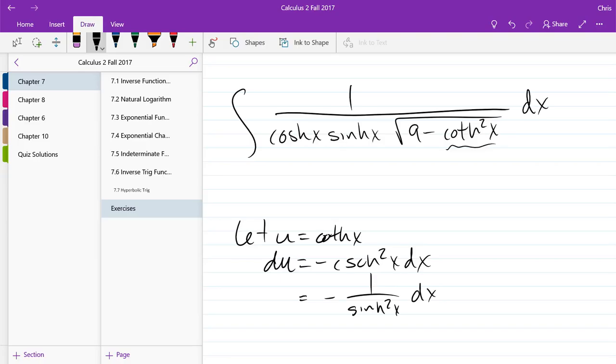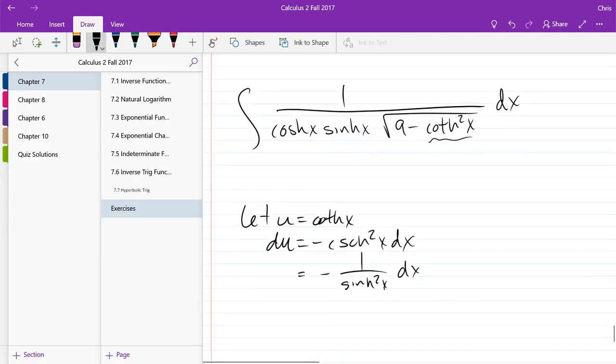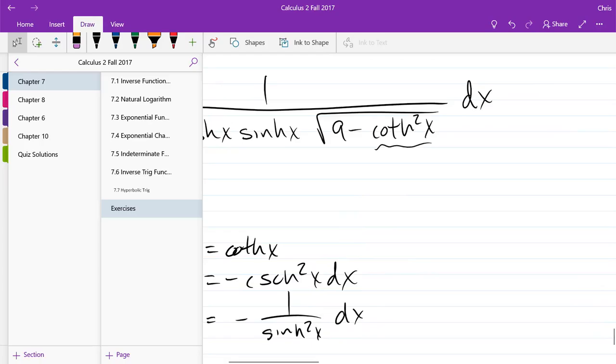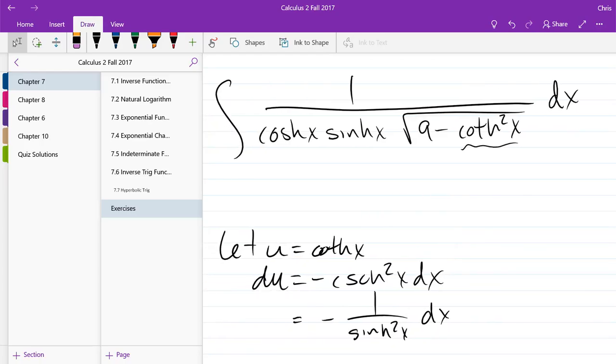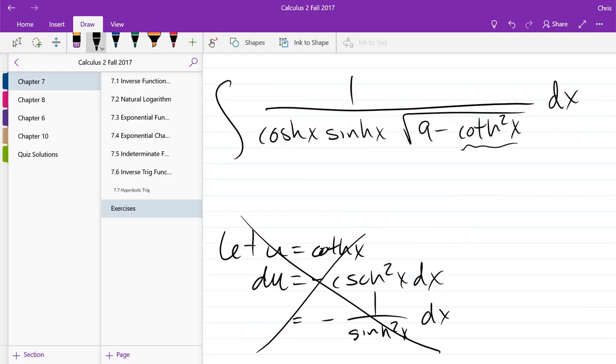This is definitely written down and correct. Oh man, I may have made it an impossible problem. So let's think about what else we can do. So when in doubt, remember, you always can use algebra. So let's rewrite cotangent as cosine over sine. So maybe that will give us some insights. Maybe it won't.